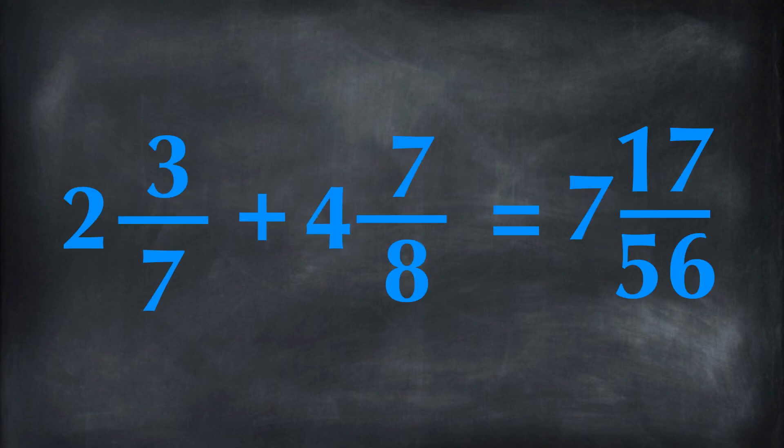When 2 and 3 sevenths is being added with 4 and 7 eighths, the final answer is 7 and 17 over 56.